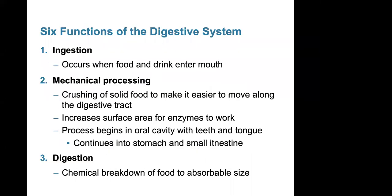The digestive system has six key functions. The first is ingestion — this occurs when food and drink enter the mouth. The second is mechanical processing, which is the physical crushing of solid food to make it easier to move along the digestive tract. It also increases the surface area for enzymes to begin the digestive process. This begins in the oral cavity with the teeth and tongue and continues in the stomach and small intestines.